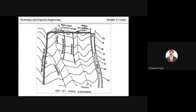First, we'll look at the ridge canal. Here you can see the main canal, and within it the ridge canal. A ridge canal, also called a watershed canal, is aligned along the ridge line or highest elevation.